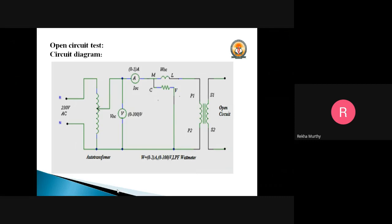Now let's move on with the circuit diagram. In the OC test, the primary of the transformer is connected to the wattmeter in series with the ammeter, and the ammeter is connected in series with the supply. This supply is obtained from the autotransformer, which provides supply to the meters. The voltmeter is connected across the winding of the autotransformer, and the secondary side will be open-circuited.